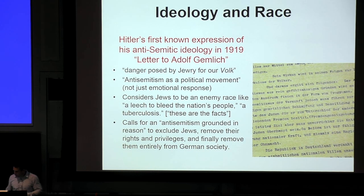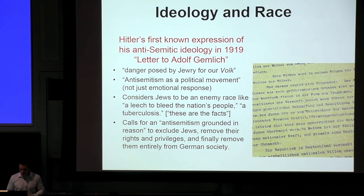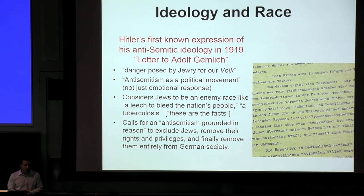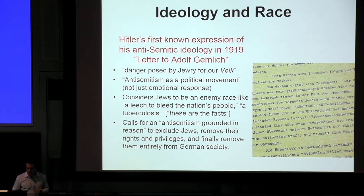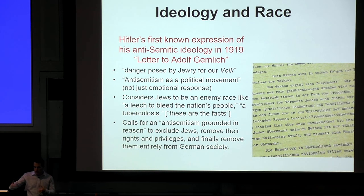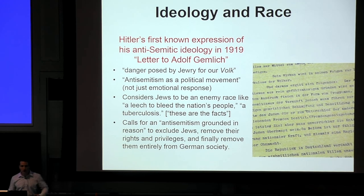His arguments are based on what he considers facts: that Jews are a tuberculosis, that they leech, that they're an enemy race, an alien race, a leech to bleed the nation, that they have a stranglehold over Germany and its economic system. Jews were never more than 1% of the total population — a very small group systematically scapegoated as part of an ideology grounded in this hatred.